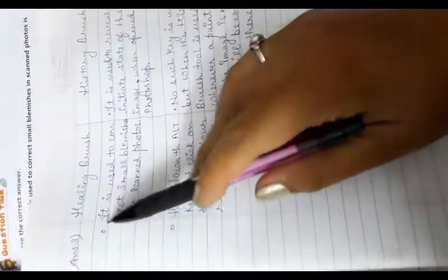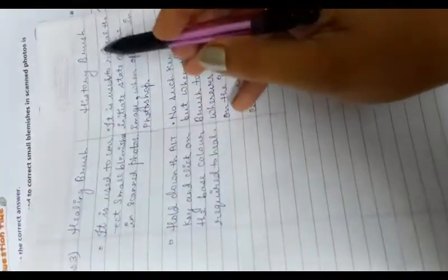Next we have question number 3. Differentiate between the healing brush and the history brush. This type you have to make a table in your notebook and then you are going to write the answer of the question in your notebook. Ok, I am giving you the answer. So answer number 3. Healing brush and history brush.